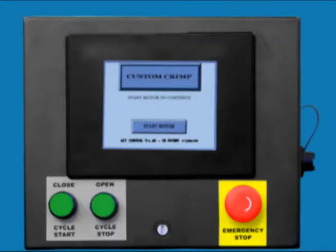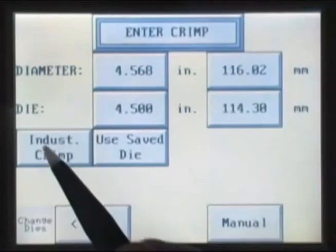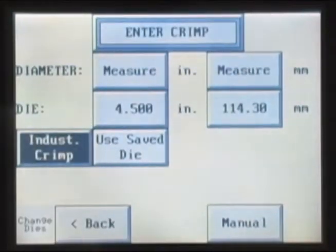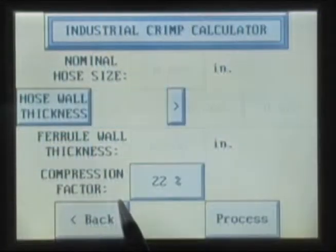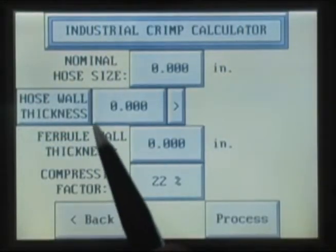Setting up the ACT Controller for crimping an industrial hose is a simple process. From the inner crimp screen, press the Industrial Crimp button and the Measure button, which will bring up the Industrial Hose Crimp Calculator.